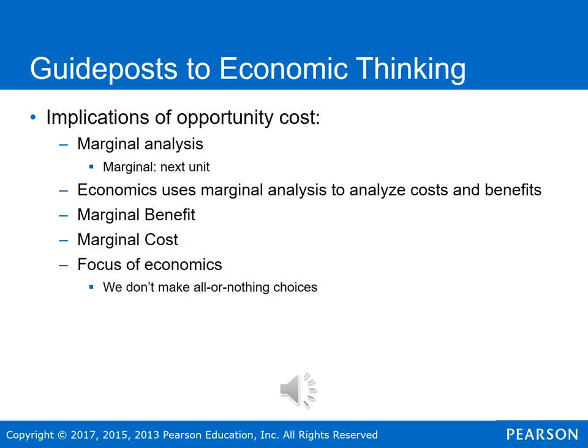Marginal decision-making is the focus of economics. We don't face all-or-nothing choices. For example, do you want to buy another shirt or go out for dinner tonight? That's a marginal decision. We're not asking do I want food or clothing and can only have one — it's whether this next unit of a good or service provides more benefit than the next unit of cash we'd be spending.